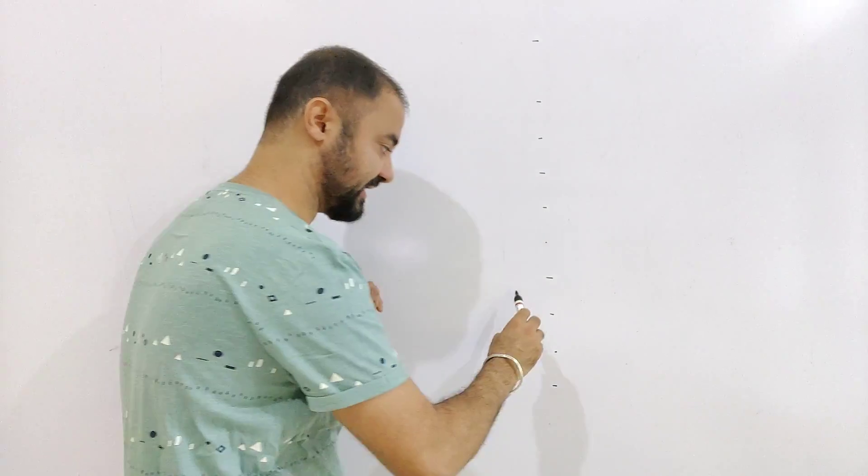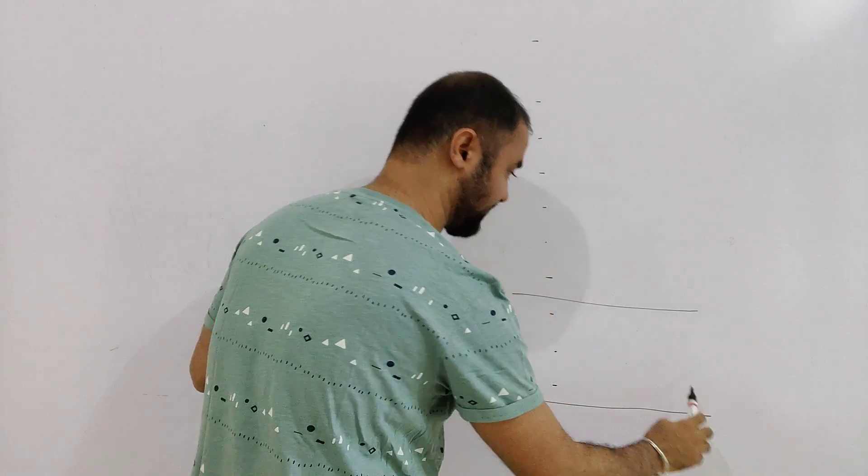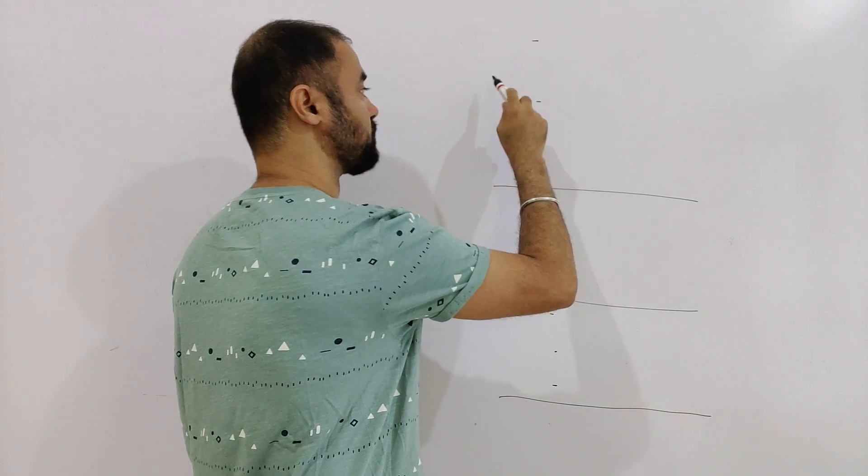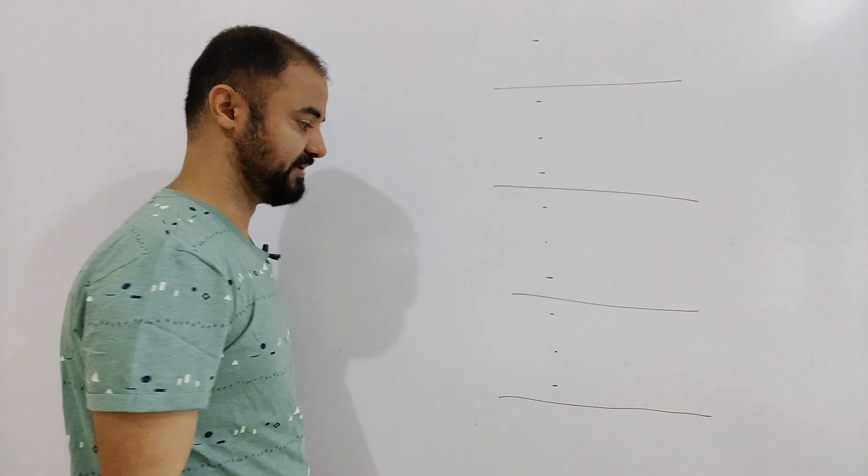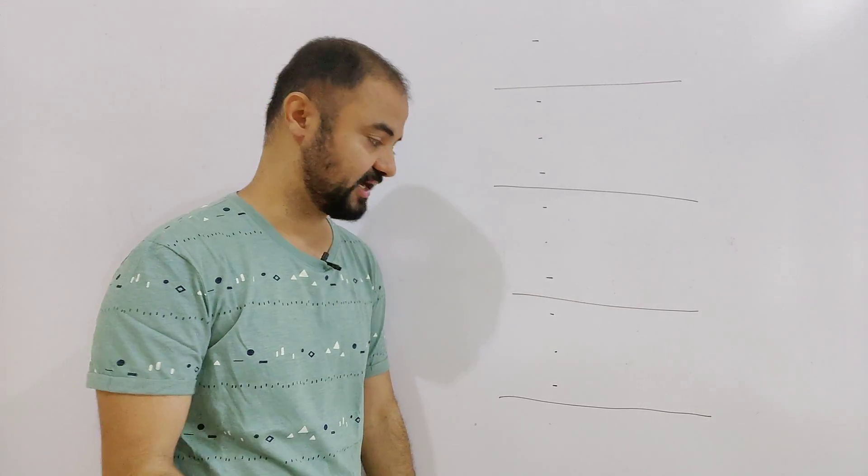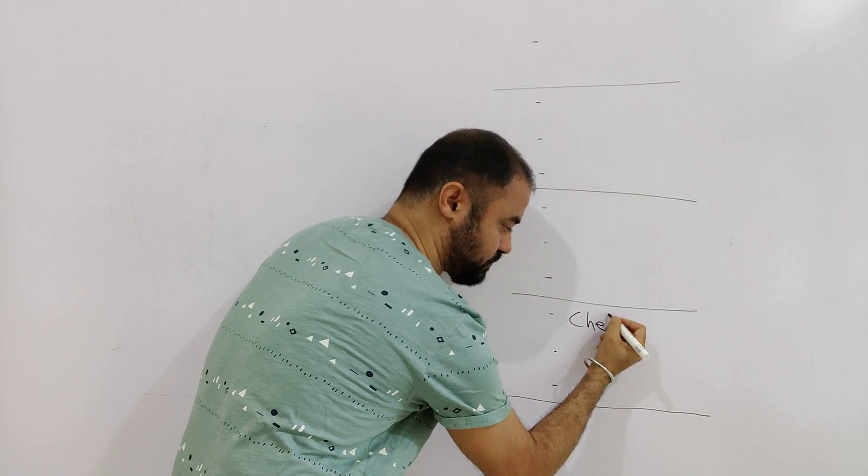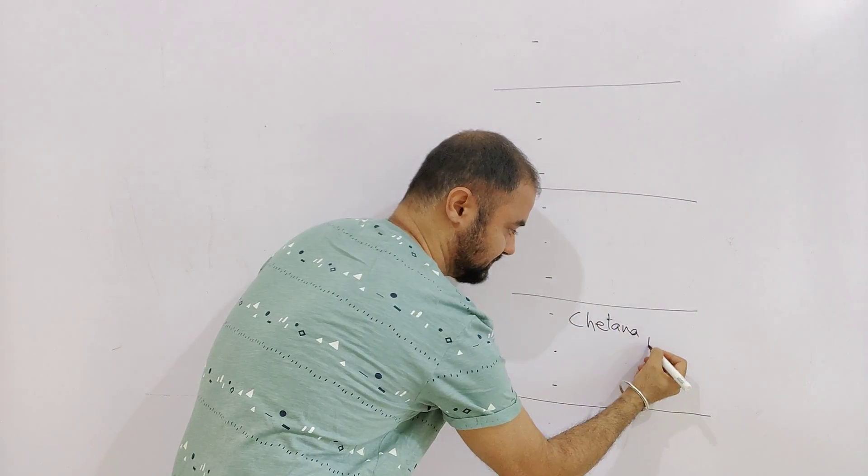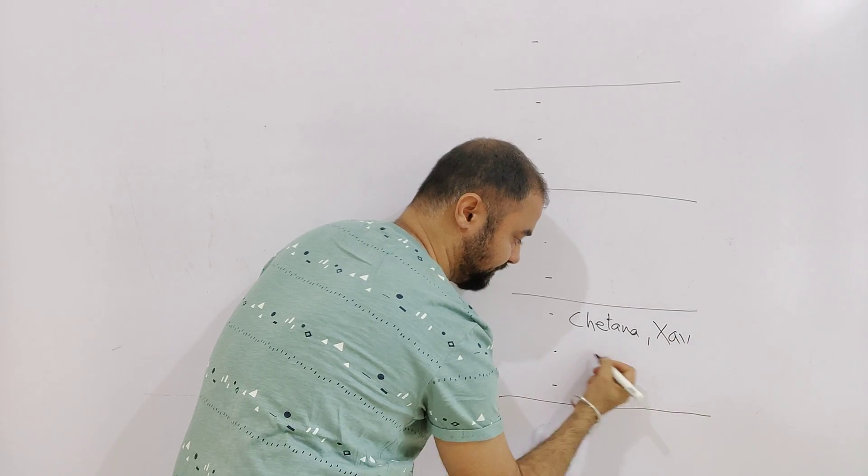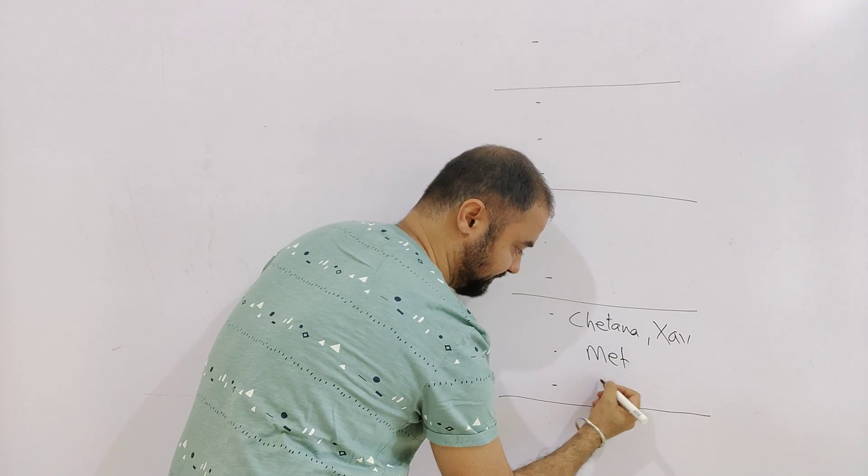So I have divided into 3, 4 brackets. Band D and then we have Band C, Band B and Band A. At Band D, at the lowest in the top 10 is Chetna, Xaviers, MET and IES.